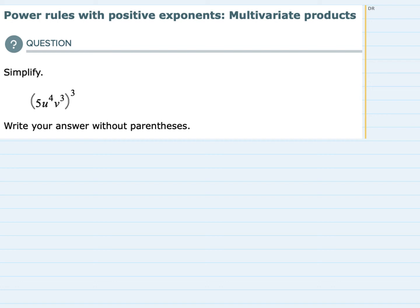So I'm going to get us started by rewriting each one of these as being raised to the third power. The 5 is being raised to the third power. The u to the fourth power is being raised to the third power, so we're going to have u to the fourth raised to the third power. And then also this v to the third is being raised to the third power outside, so v to the third is also being raised to the third power.